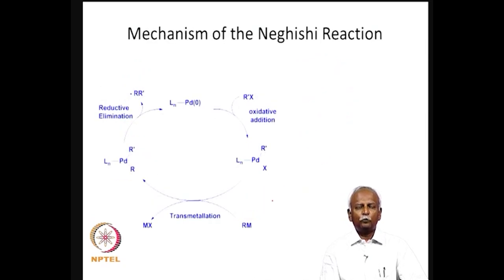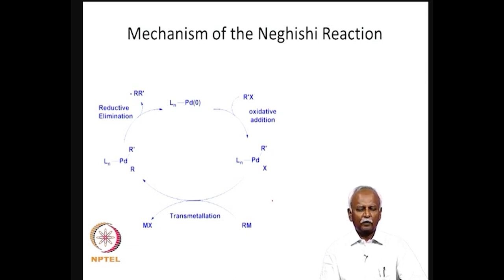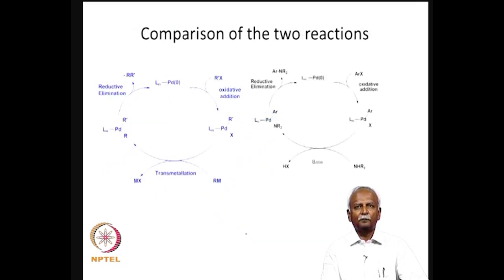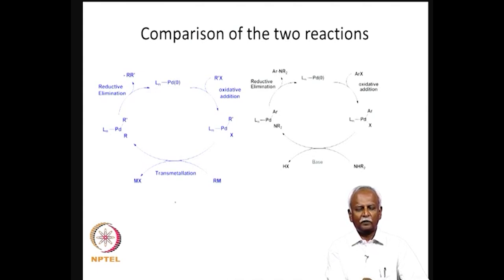This reaction is identical or very similar to the Negishi reaction. The Negishi reaction is shown here, and the only difference is that instead of transmetallation with a metal, you have an amine carrying out the transmetallation step — everything else in this catalytic cycle is exactly the same. Here are the two catalytic cycles together, and you can see that the parallel is remarkable; it is only in the transmetallation step where the two reactions differ.